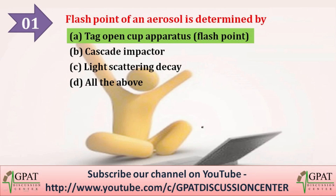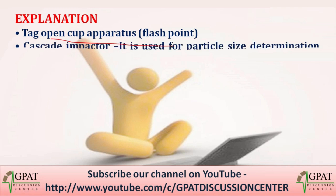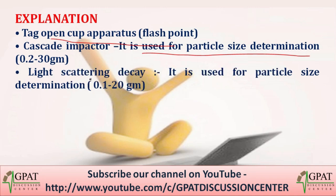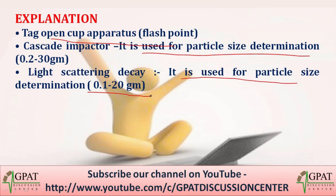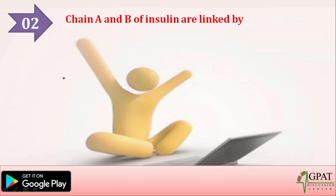The Tag open cup apparatus is used to determine flash point. The cascade impactor is used for particle size determination in the range 0.2 to 30 micrometers, and light scattering decay is also used for particle size determination in the range 0.1 to 20 micrometers.